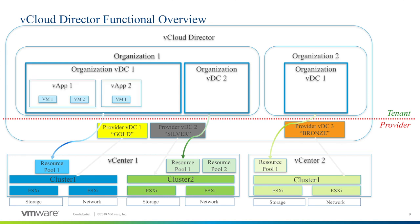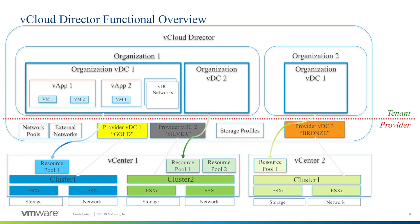A vApp is a unit of deployment within vCloud Director. A vApp contains one or more VMs and their networking configuration, startup order, and other parameters. A vCloud Director presents vSphere storage to organizations by using objects called storage profiles, and presents NSX networking by using objects called organization networks.